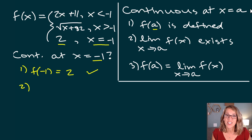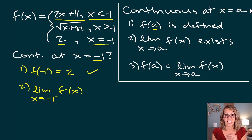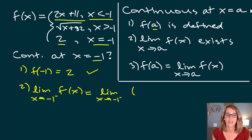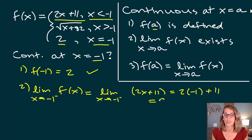Step two: we need to show the limit exists, so we test from the left and from the right. The limit as x approaches negative one from the left uses the first piece of the definition where x is less than negative one. That gives us the limit as x approaches negative one from the left of 2x + 11. Plugging in gives 2(-1) + 11, which equals nine.